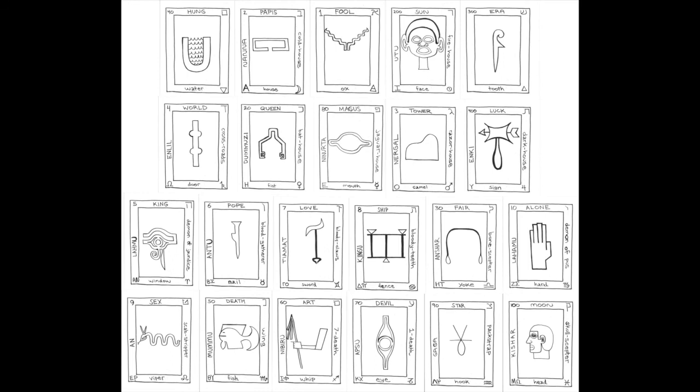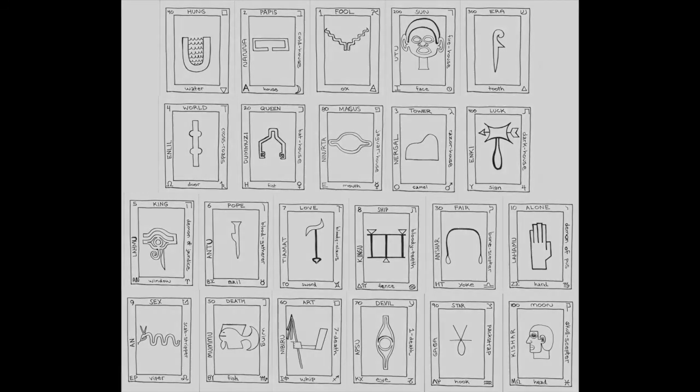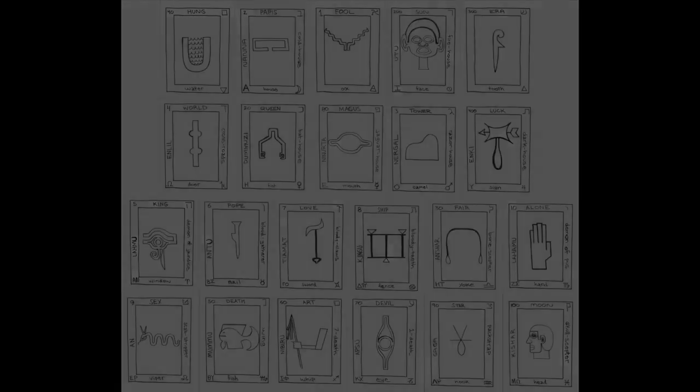Altogether they comprise the first syllabary to definitively link the Phoenician alphabetic sums to the Egyptian hieroglyphic pictures in a meaningful manner for all twenty-two. The order presented here was in the order of the trumps only.